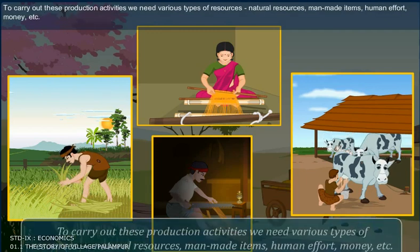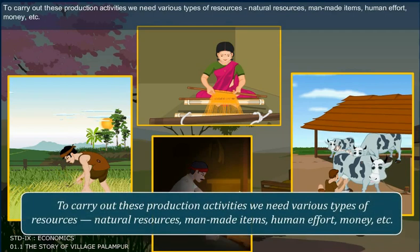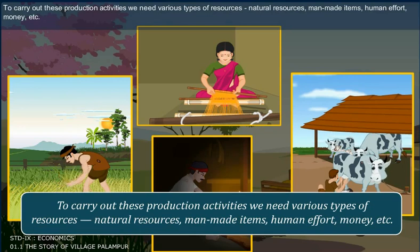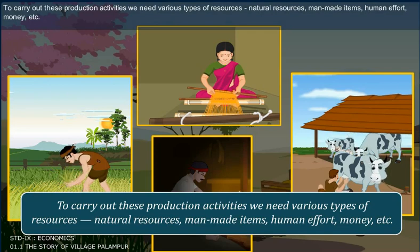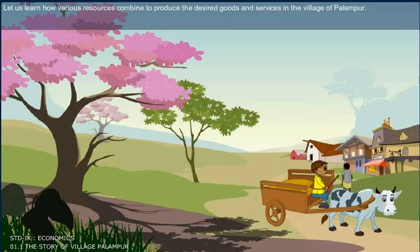To carry out these production activities, we need various types of resources — natural resources, man-made items, human effort, money, etc. Let us learn how various resources combine to produce the desired goods and services in the village of Palampur.